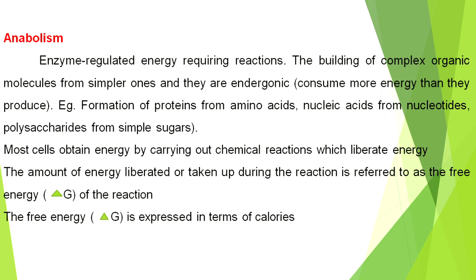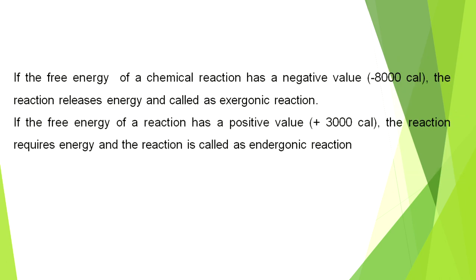Most cells obtain energy by carrying out chemical reactions which liberate energy. The amount of energy liberated or taken up during the reactions is referred to as the free energy of the reaction, expressed in terms of calories. If the free energy has a negative value — for example, minus 8000 calories — the reaction releases energy and is called an exergonic reaction. If the free energy has a positive value — for example, plus 3000 calories — the reaction requires energy and is called an endergonic reaction.